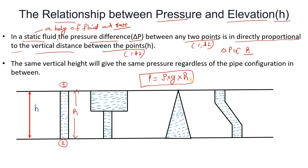And h is the height of the fluid. In the case of water, this density will be 1000 kg per cubic meter. At any particular temperature the density will be constant, so pressure will vary with height.